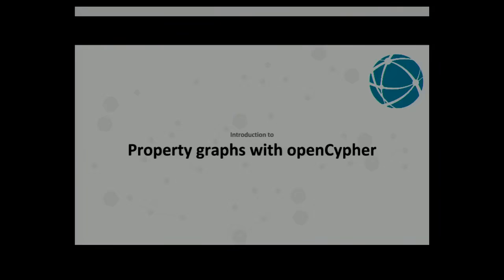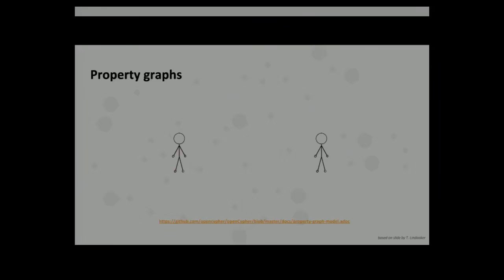So, property graphs with Cypher. Data — how do we model it? People have been doing that for a long time in many different ways. Everybody knows SQL and tables. Maybe some here know RDF as a dominant way of modeling. The way that we are interested in from Cypher is property graphs, which is the graph data model that was born out of observations of application engineers. If you're writing an application and you want to model your data and it feels natural to model it as a graph — and in many cases that is just a natural way to model your data — then this data model is for you.